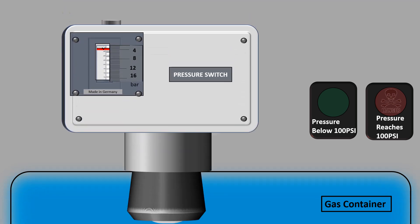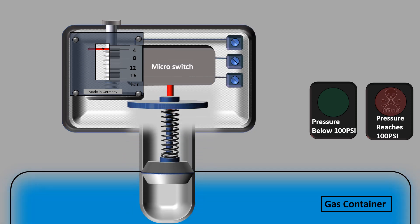Working of a mechanical pressure switch. Consider that we have a gas container and we need a green light to switch on when the pressure inside the container is below 100 psi, and a red light to switch on when the pressure reaches 100 psi. For this we install a pressure switch on this container and adjust the set point of this pressure switch at 100 psi by turning the set point adjustment screw.